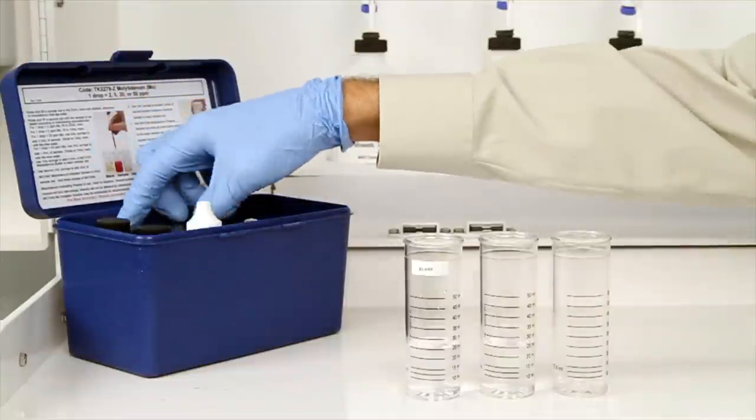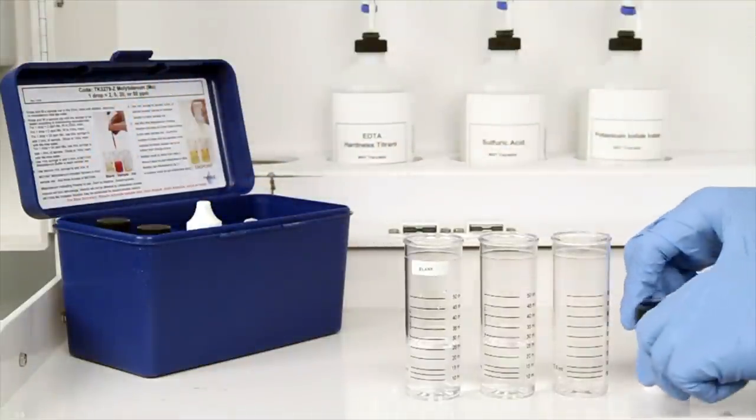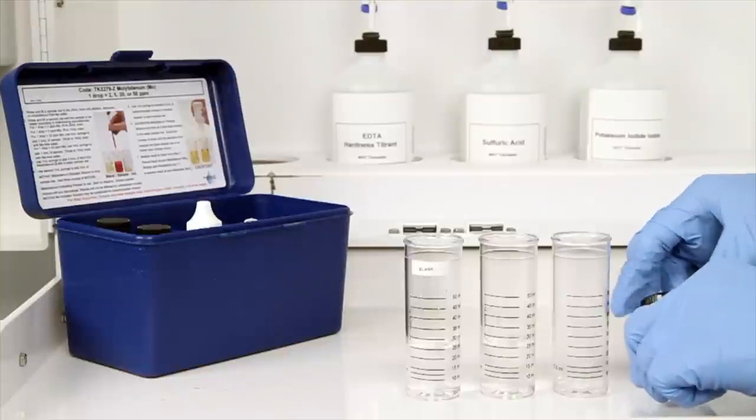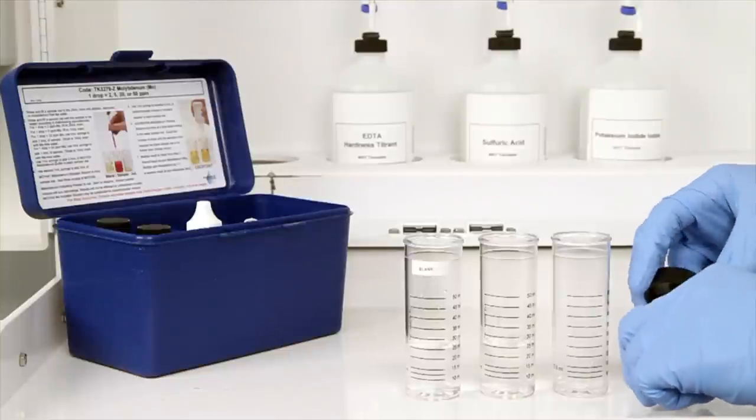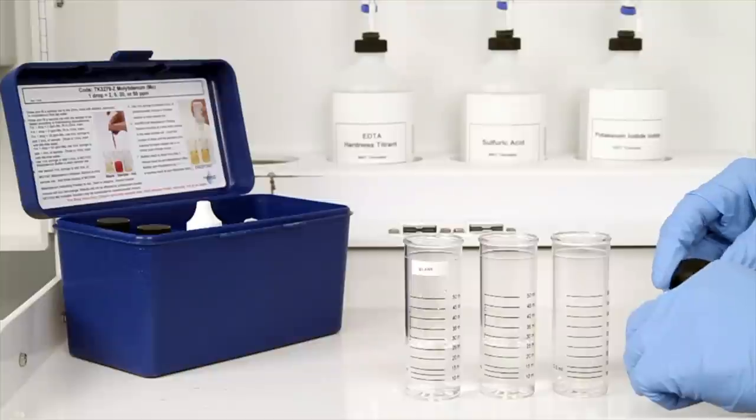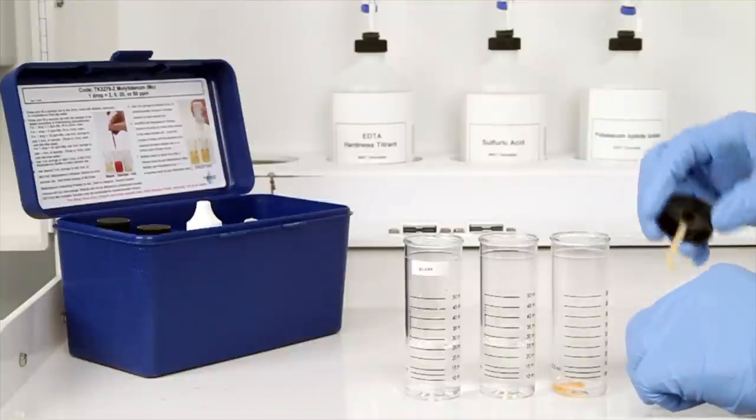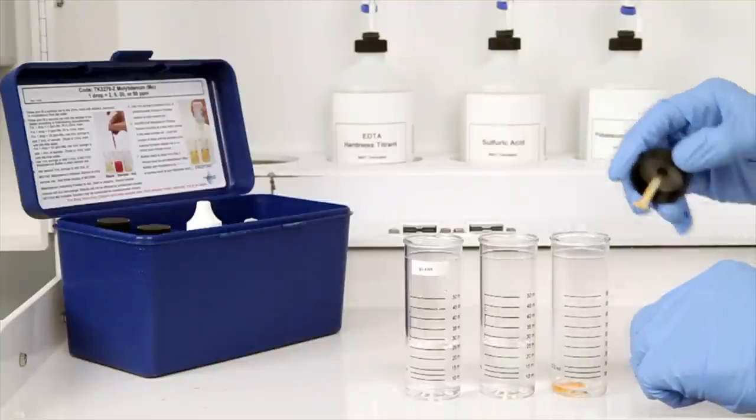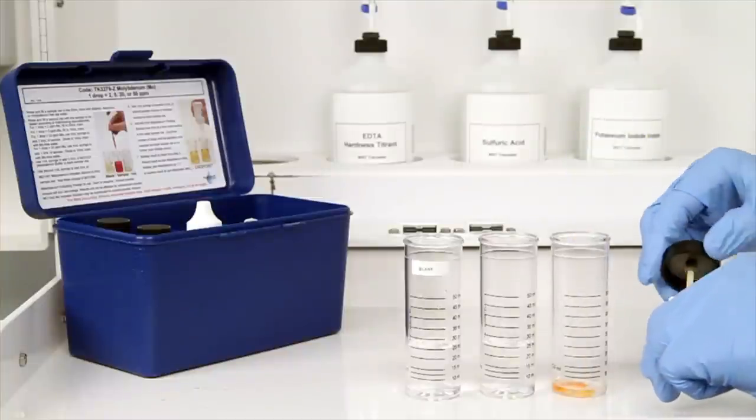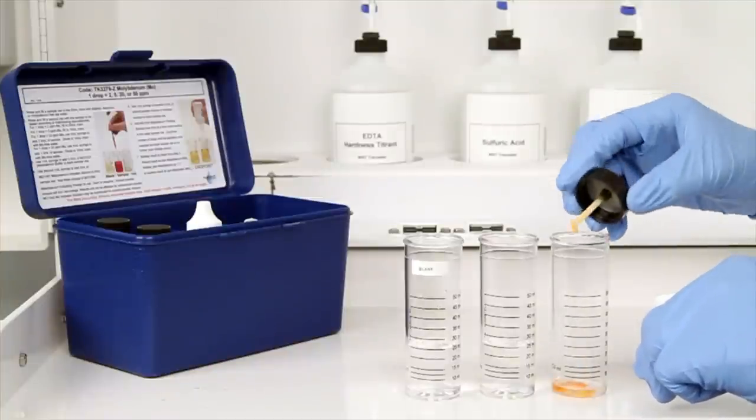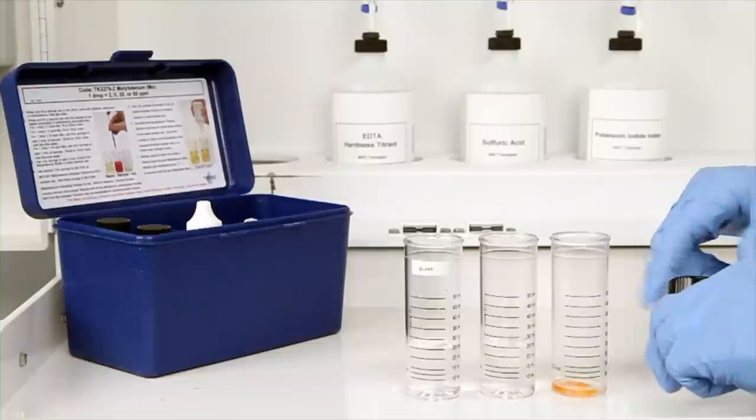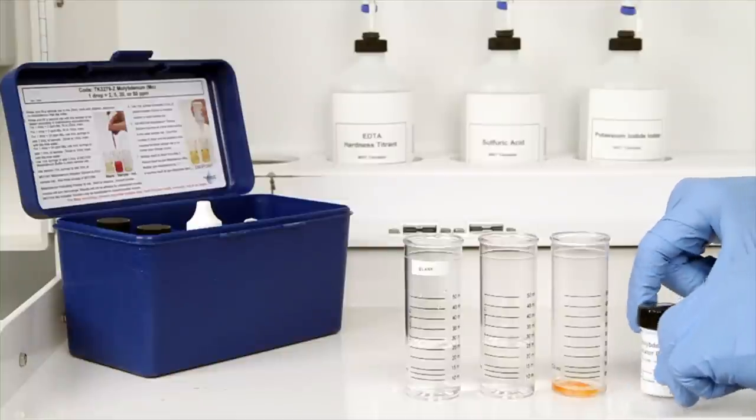Then, add three scoops of molybdenum indicating powder to the third vial and swirl to dissolve. The solvent powder mixture will turn a red-orange color. Your results will not be affected by undissolved crystals.